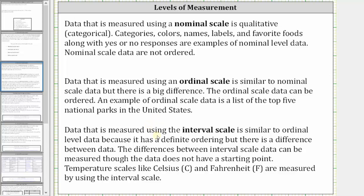Data that is measured using the interval scale is similar to ordinal level data because it has a definite ordering, but there is a difference between data. The differences between interval scale data can be measured, though the data does not have a starting point. Temperature scales like Celsius and Fahrenheit are measured by using the interval scale.